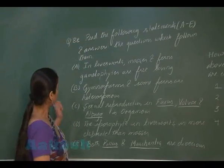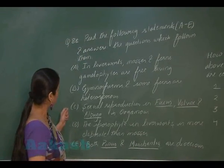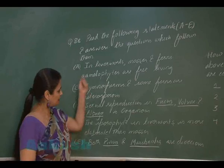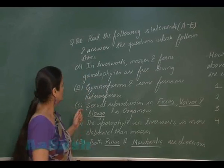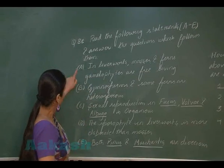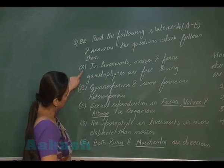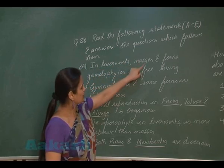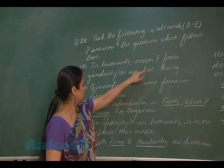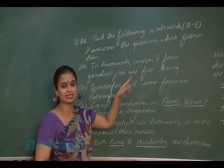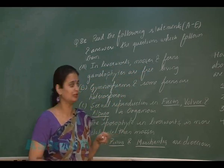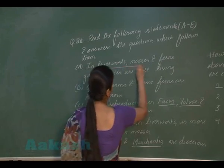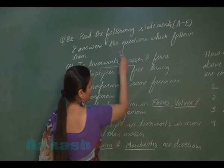In question 88, we have to see how many statements are correct. Option A: in liverworts, mosses, and ferns, gametophytes are free-living. Liverworts and mosses are bryophytes; for ferns the gametophytes are also free-living. So this option is correct.